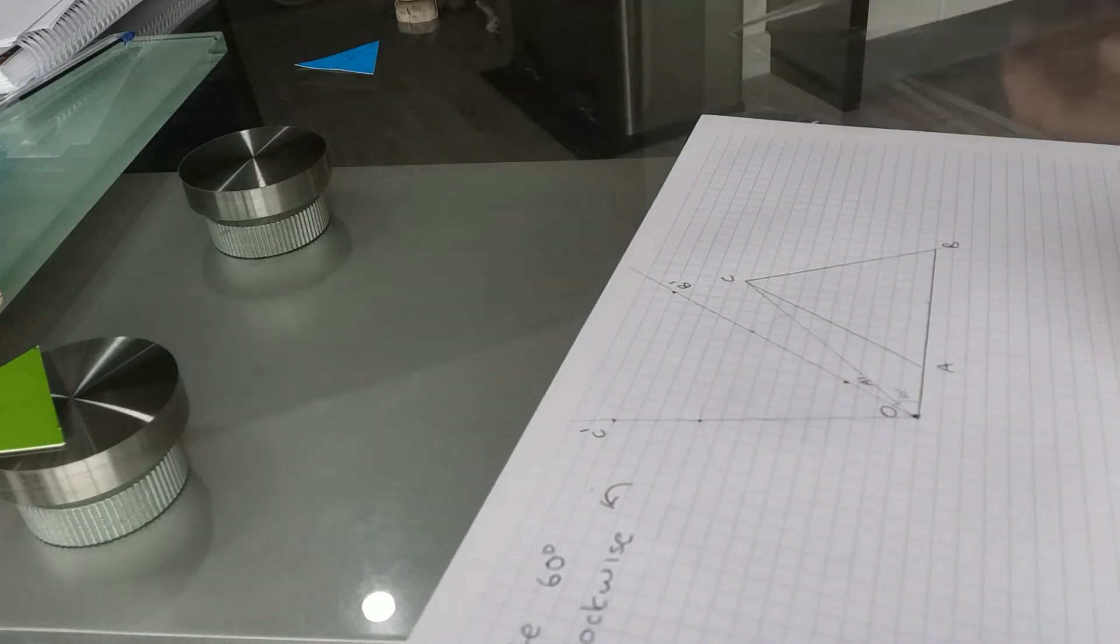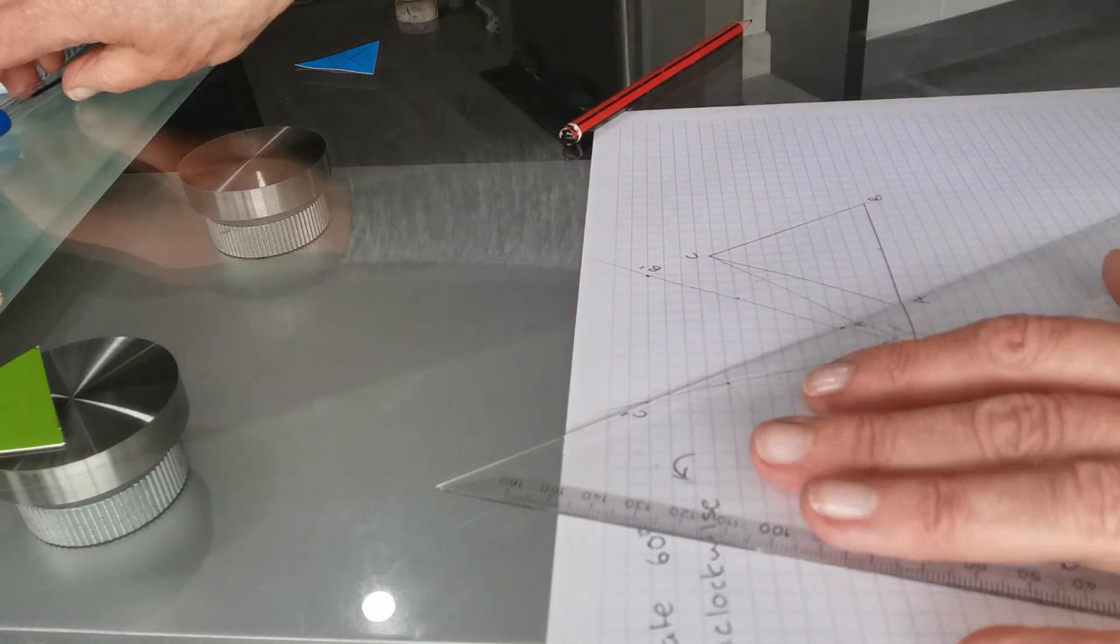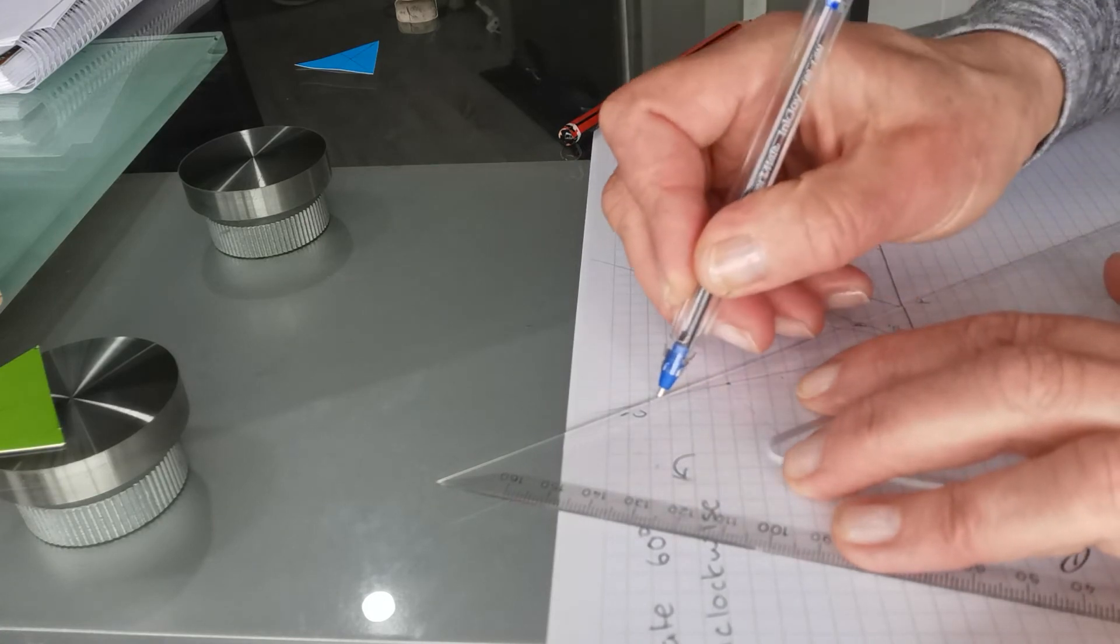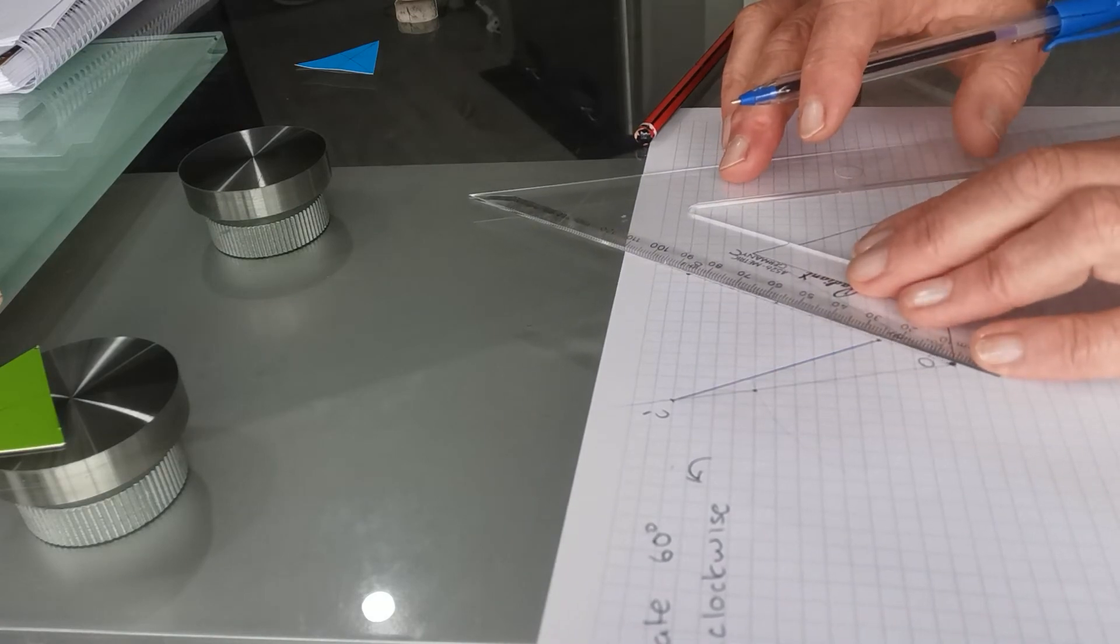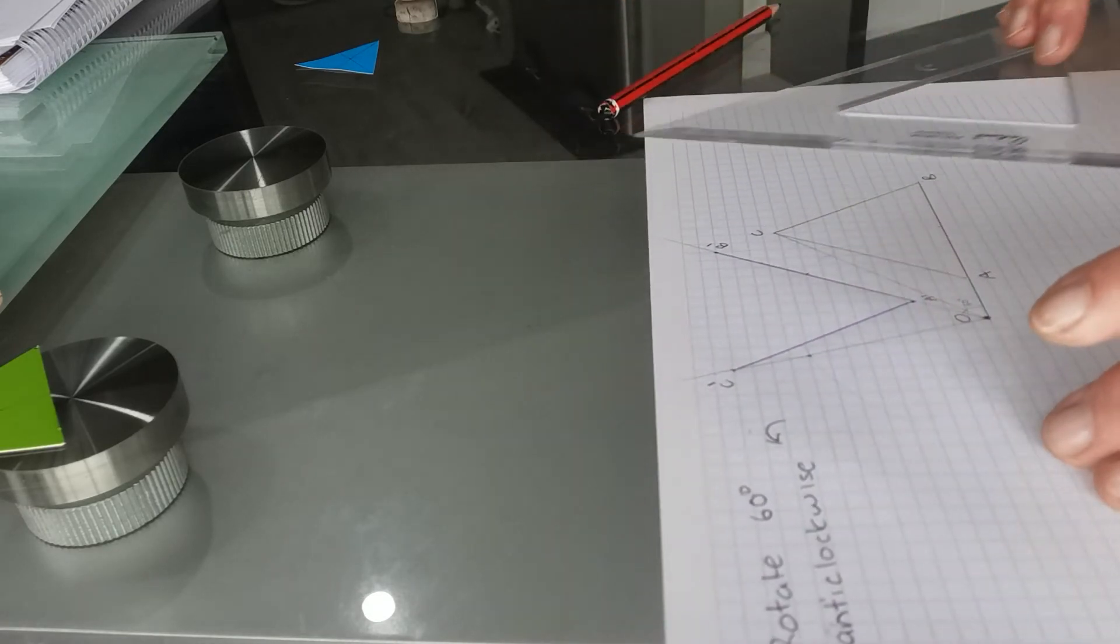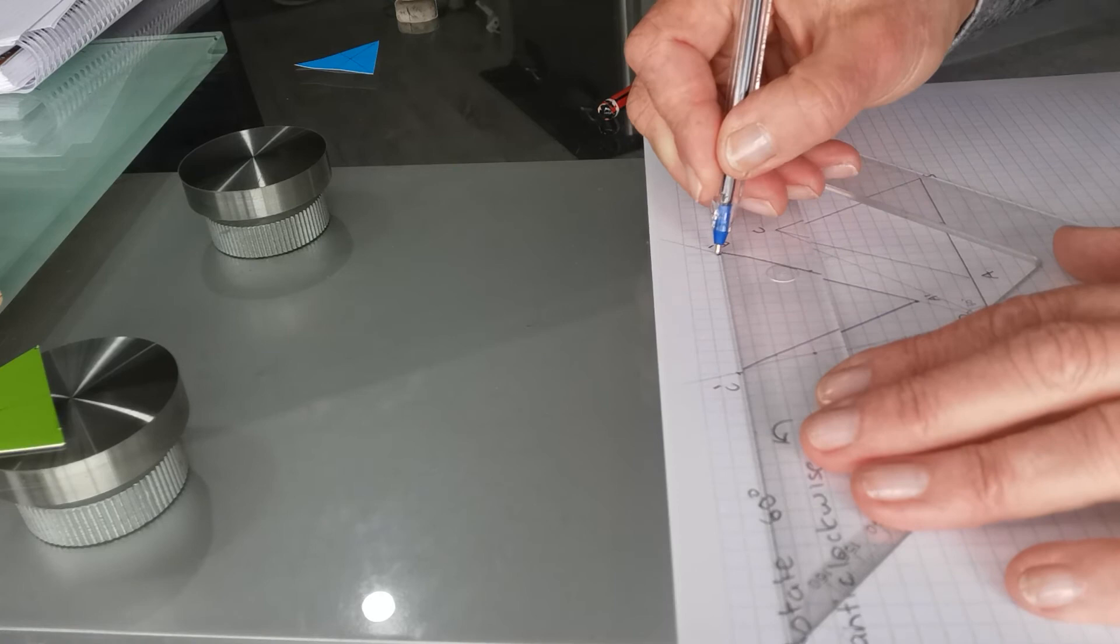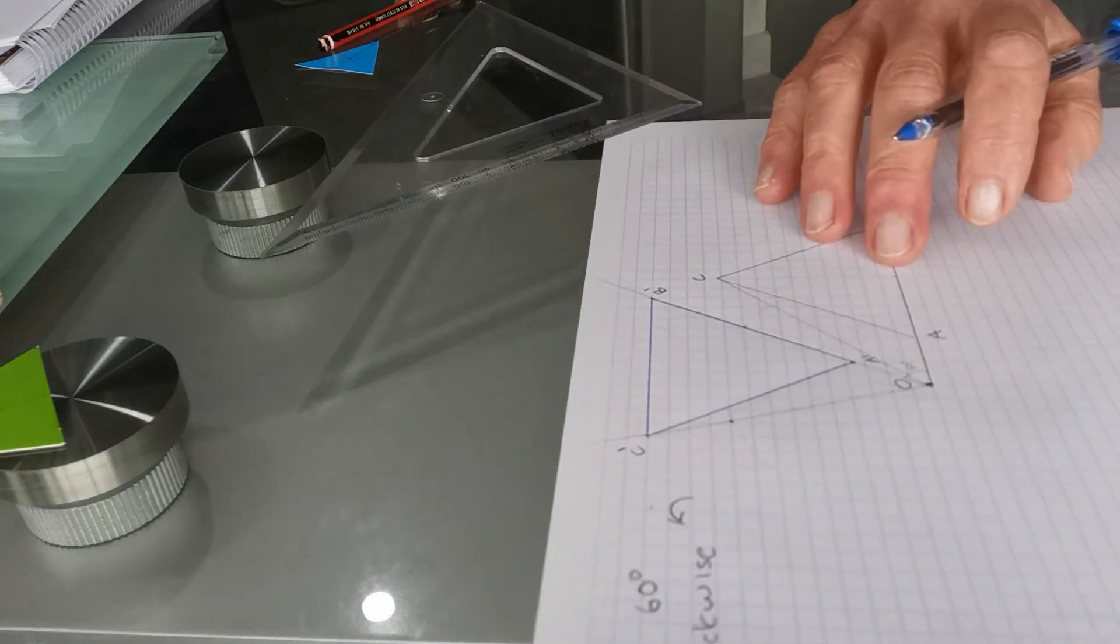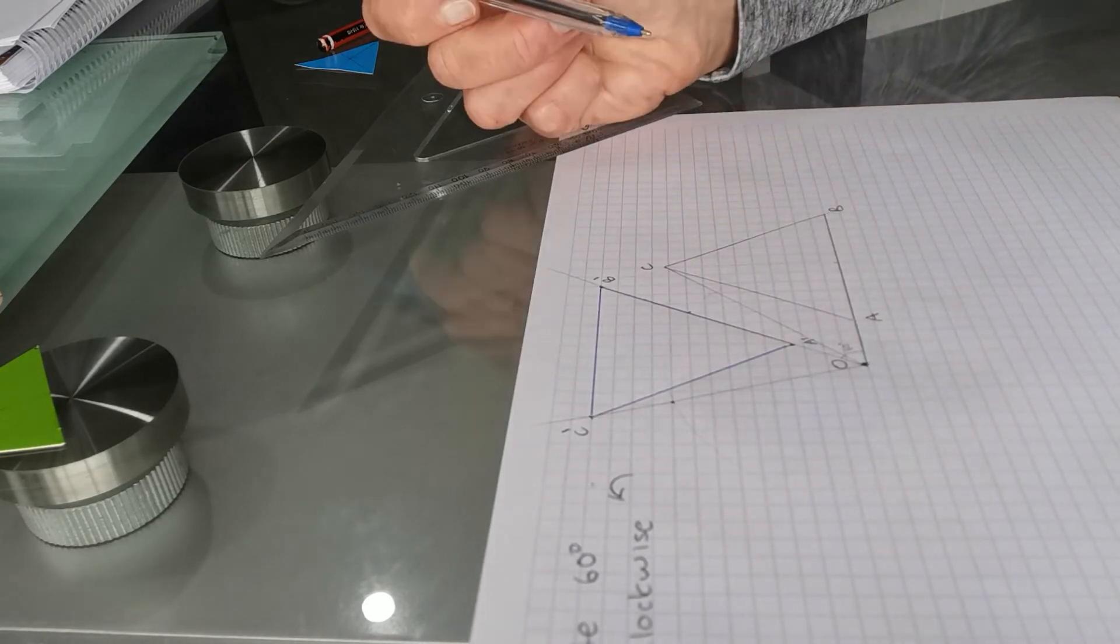Okay. So joining A prime with C prime. And I think I'll use a blue color this time. Joining A prime with B prime, A prime with C prime, and B prime with C prime. And as you can see, it's still a really accurate equilateral triangle.